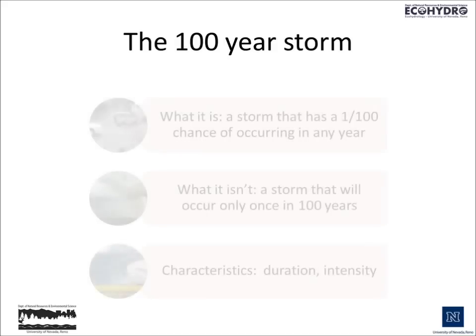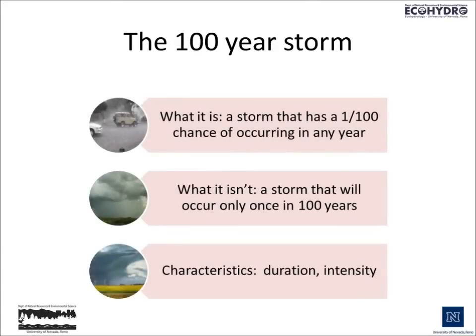The 100-year storm is a storm that has a 1 in 100 chance of occurring in any year. It isn't a storm that will occur only once in 100 years, and it has a few different characteristics, including the duration of the storm and the intensity of the storm. 100-year storms are developed using a statistical process that looks at the maximum annual storms that have been recorded by a data recording network.